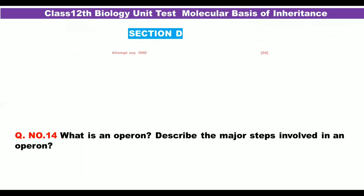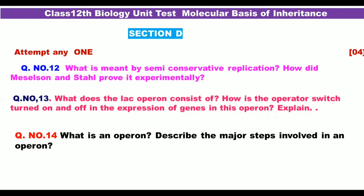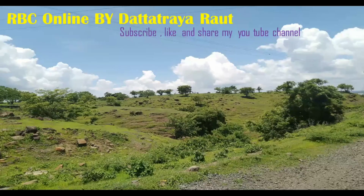Question 12: What is meant by semi-conservative replication? How did Meselson and Stahl prove it experimentally? Question 13: What does the lac operon consist of? What is an operator? How does it turn on and turn off the expression of genes in the operon? Explain.